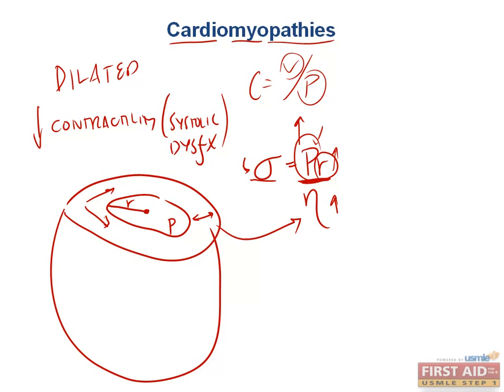So our job is to add sarcomeres in series, one on the end of the other. This helps us distend our chamber to increase our compliance so that volume does not increase the pressure within the chamber so fast. Even though the heart does not like this situation, the increased volume overload from decreased systolic ejection leads to an increase in radius, which creates significant increases in wall tension.